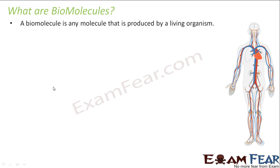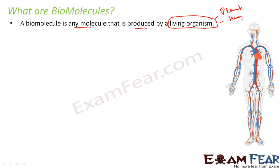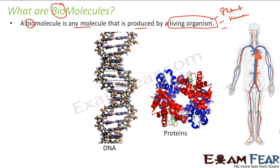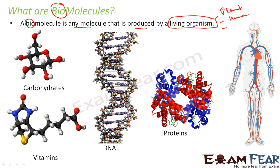So what are biomolecules? A biomolecule is any molecule that is produced by a living organism. A living organism can be a plant, a human, any other animal — dogs, cats, rats, rabbits — or even algae. Any molecule produced by a living organism is called a biomolecule. For example, protein is one example of a biomolecule. Then we have DNA, which is responsible for heredity — that is also a biomolecule. Carbohydrates and vitamins are also biomolecules.